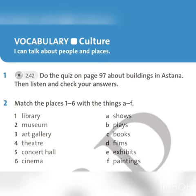Children, the second task is exercise number 2. You must match the places 1 to 6 with the things A to F. For example, library — books.